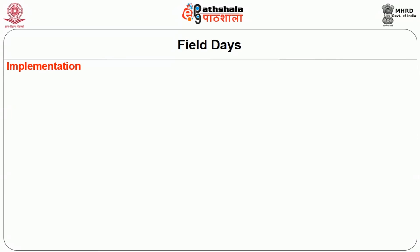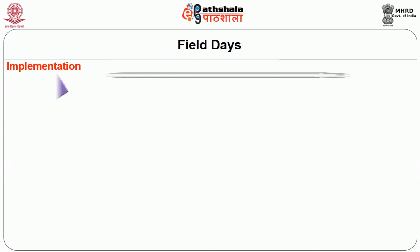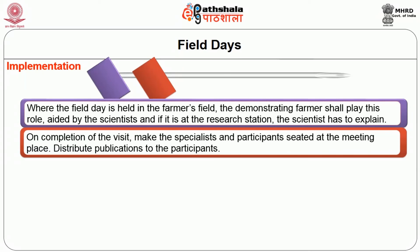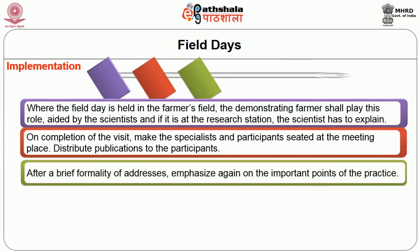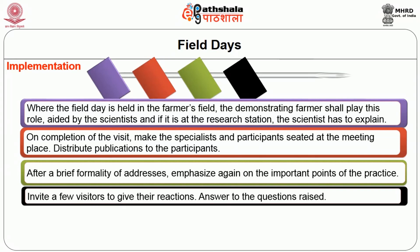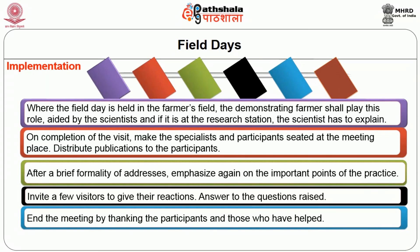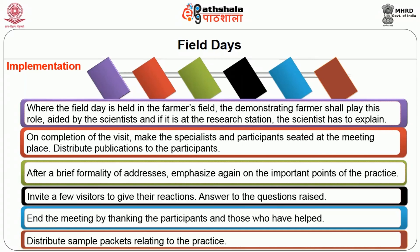In the implementation part of field days: assemble participants and welcome them on arrival. Give a short introduction about the purpose of the field day and how the group shall move. Where the field day is held in the farmer's field, the demonstrating farmer shall play his role aided by the scientist; if it is at the research station, the scientist explains. On completion of the visit, seat the specialists and participants at the meeting place. Distribute publications to the participants. After a brief formality of addresses, emphasize again the important points of the practice. Invite few visitors to give their reactions. Answer questions raised. End the meeting by thanking participants and those who helped. Distribute sample packets relating to the practice if any.